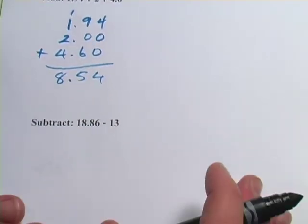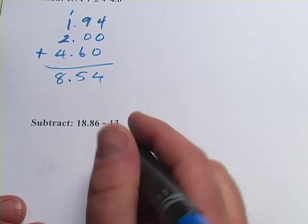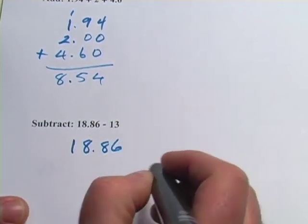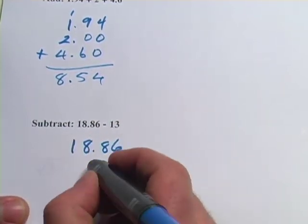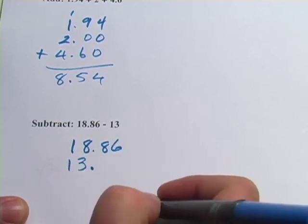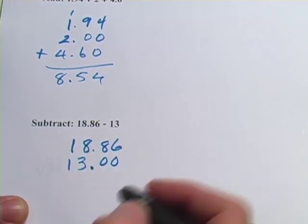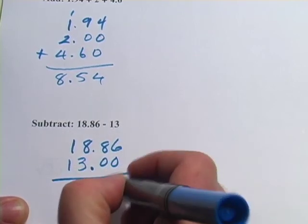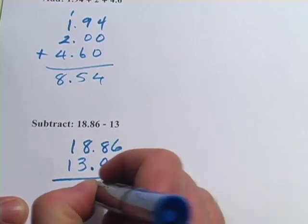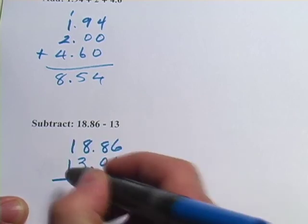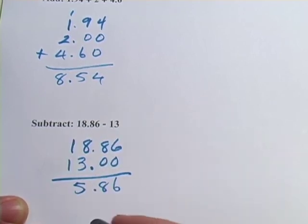The last one here is a subtraction problem: 8.86 minus 13. So we'll go ahead and set this up. The decimal point is right there, so my 13 is going to go there, and I'm going to fill in with trailing zeros. 6 minus 0 is 6, 8 minus 0 is 8, there's my decimal point. 8 minus 3 is 5, 1 minus 1 is 0, so I don't have to put anything there, and we have 5.86.